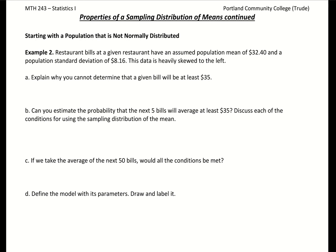Let's look at how we would work with a sampling distribution of means if our population is not normally distributed. In this example, we're going to look at restaurant bills at a given restaurant. They have a mean of $32.40, a standard deviation of $8.16. These are population values, so that's our population mean and population standard deviation. And something they tell us is the shape of our distribution is heavily skewed to the left.